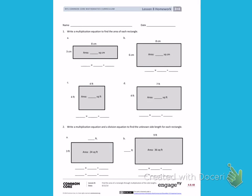This is Module 4, Lesson 8 Homework, Side 1. Today's objective was to find the area of a rectangle through multiplication of the side lengths.